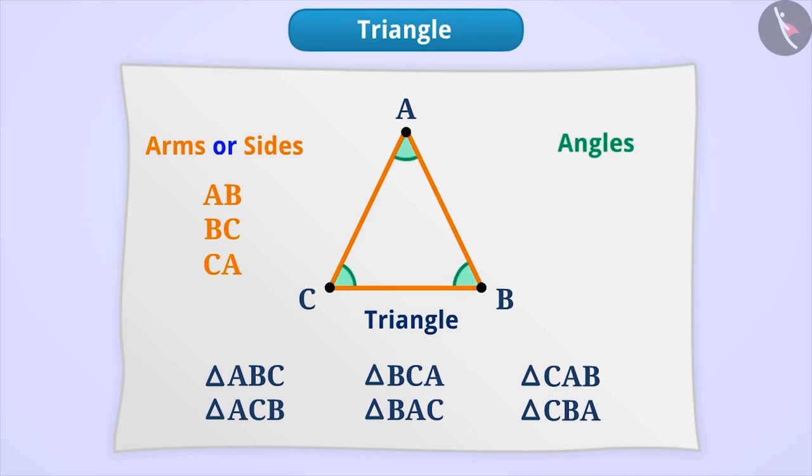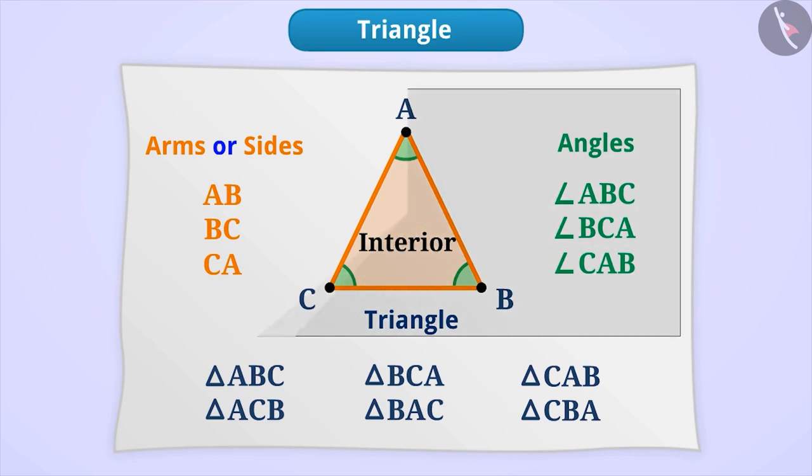It also has three angles such as angle ABC, angle BCA and angle CAB. The inside of the boundary of the triangle is called the interior of the triangle and the outside of the triangle is called the exterior of the triangle.